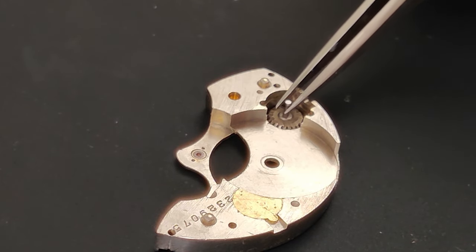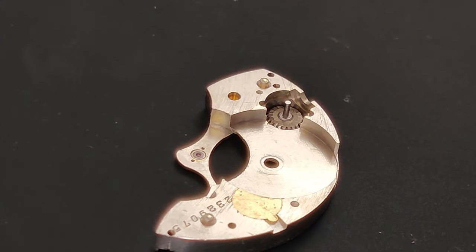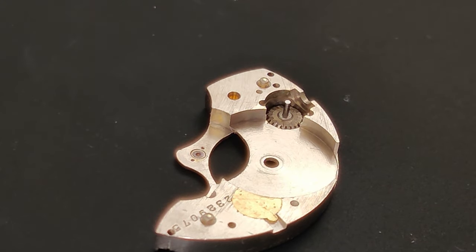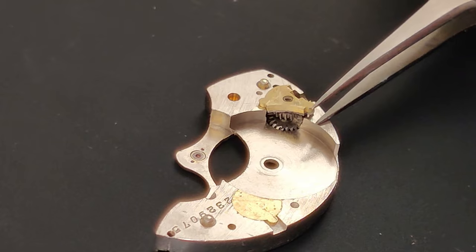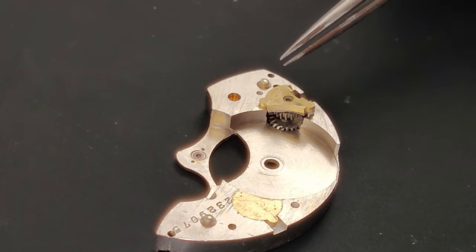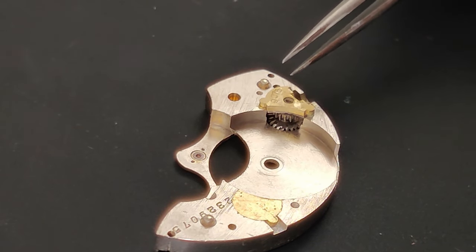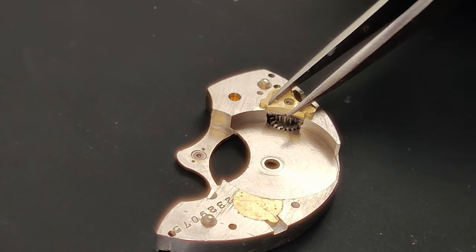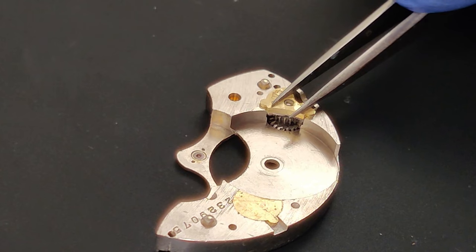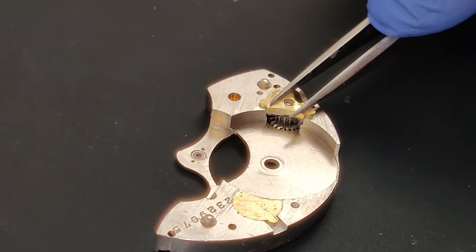And we'll take this and set it into our freshly closed bushing. And a little lubrication. Now we can position the winding bridge. And press it down slowly.